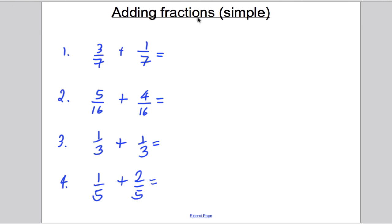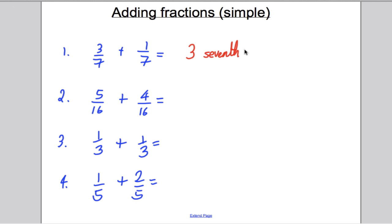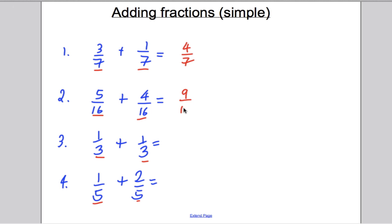The next set of questions were about adding very simple fractions, and these were straightforward if you just remembered how to say a fraction. 3 over 7 means 3 sevenths; 1 over 7 means 1 seventh. Add them and you get 4 sevenths. When the numbers on the bottom are the same, you just add the tops. So: 3 sevenths plus 1 seventh is 4 sevenths; 5 sixteenths plus 4 sixteenths is 9 sixteenths; 1 third plus 1 third is 2 thirds; 1 fifth plus 2 fifths is 3 fifths.